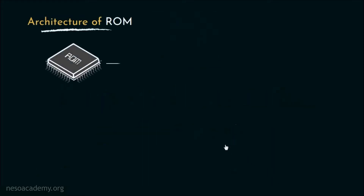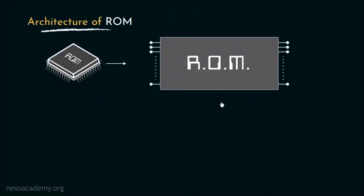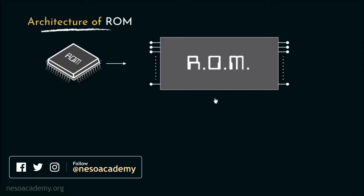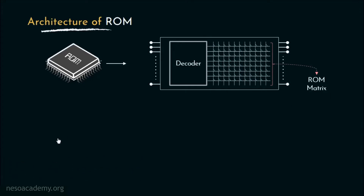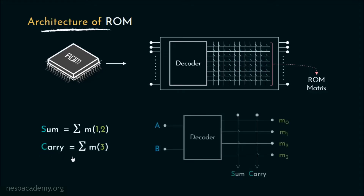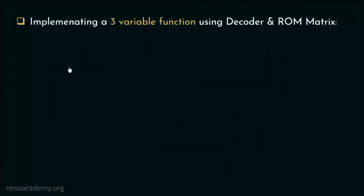In the previous session, we came to know about the hardware specification of ROM chips. We learned that inside a ROM chip, there remains a combinational circuit which is the decoder, and this particular grid of connections which is known as ROM matrix. Also, we learned how to embed Boolean functions such as sum and carry functions within a ROM chip. Now in this session, we will investigate a bit more about the architecture of the ROM matrix, and try to implement a three-variable function using a decoder and ROM matrix.